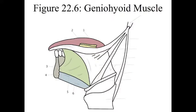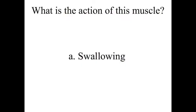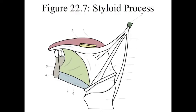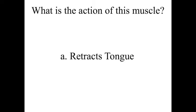Number 6 is the geniohyoid muscle. This muscle connects between those genial tubercles and your hyoid bone, and it assists in swallowing. Number 7 is the styloid process. Number 8 is the styloglossus, connecting at the styloid process and down at the glossus or the tongue — it actually retracts the tongue.